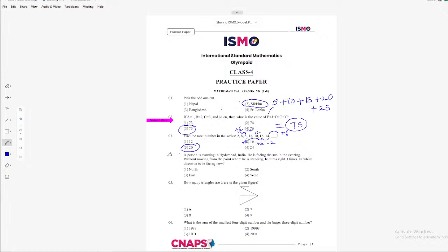So let's move on to question number 4. A person is standing in Hyderabad, India. He is facing the sun in the evening without moving from the point where he is standing. He turns right 3 times. In which direction is he facing now? You all know that in the evening the sun will be in the west, towards the west.